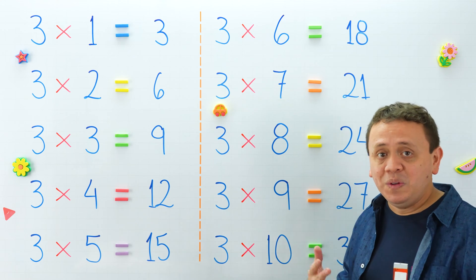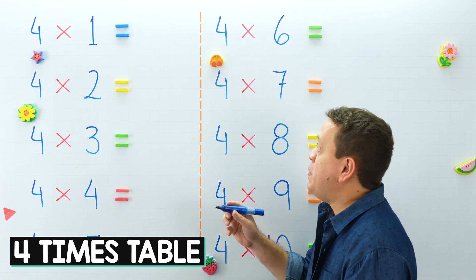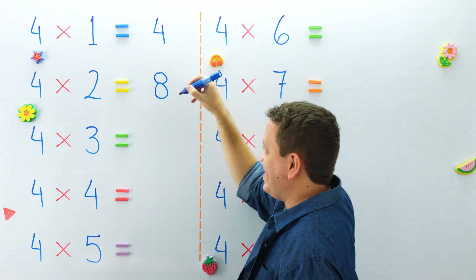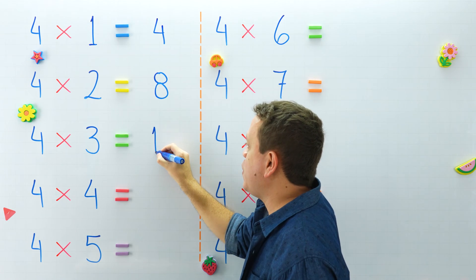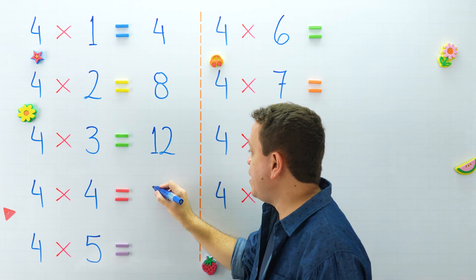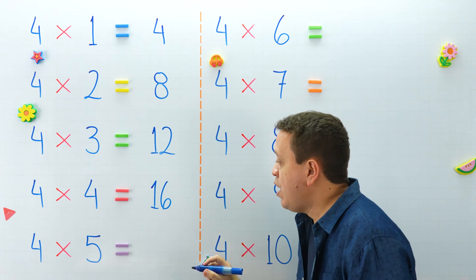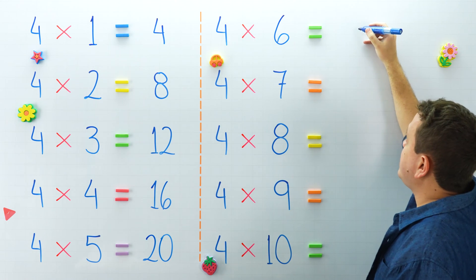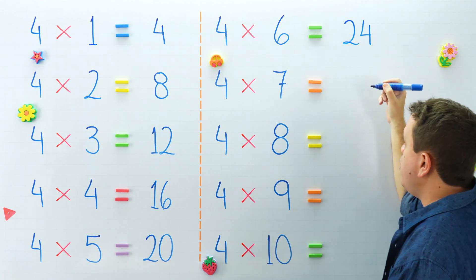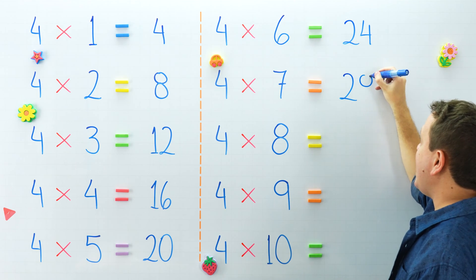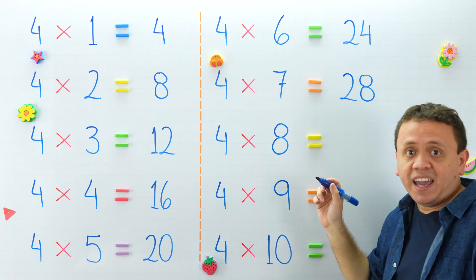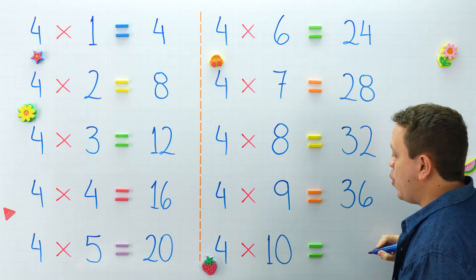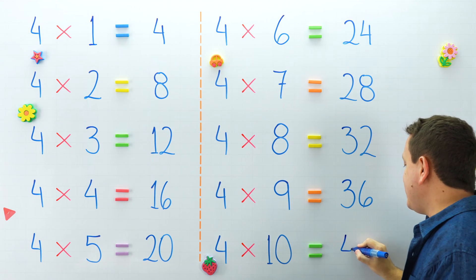We're done with this table. Why don't we study the 4 times table? 4 times 1 equals 4, and 4 times 2 equals 8. The next one, 4 times 3 equals 12, and 4 times 4 equals 16. 4 times 5 equals 20. Let's jump to the next column. 4 times 6 equals 24. 4 times 7 equals 28. And 4 times 8 equals 32. 4 times 9 equals 36. One more, 4 times 10 equals 40.